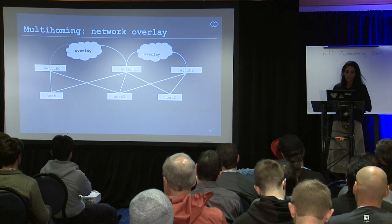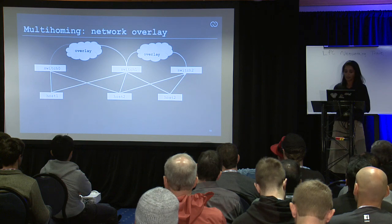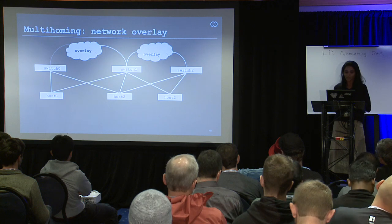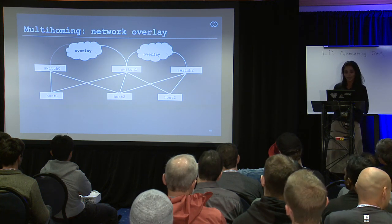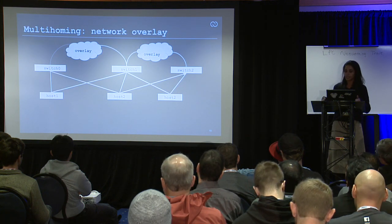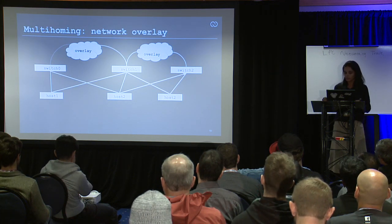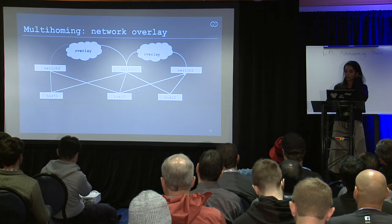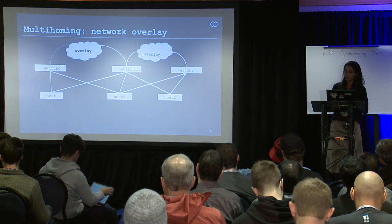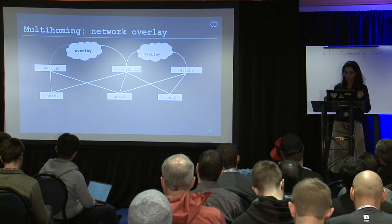Network overlays are the next generation of multi-homing. What I just talked about — static peer link and all that — was yesterday. Next generation is network overlays: the peer link disappears, and the backup link becomes the overlay. Performance challenges with the overlay as backup link are yet to be determined, as the whole industry is coming up with multi-homing solutions with network overlays.